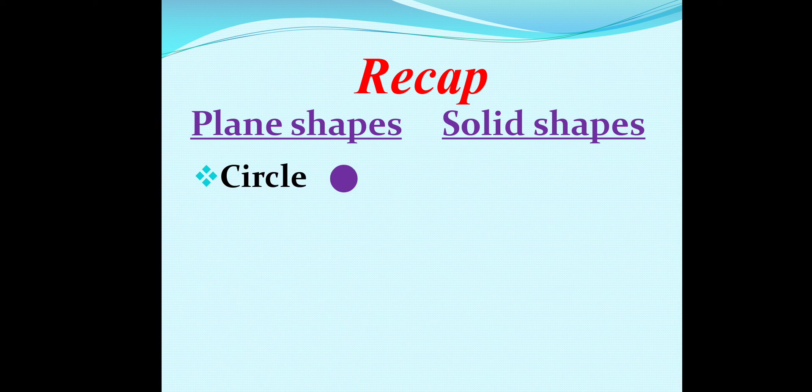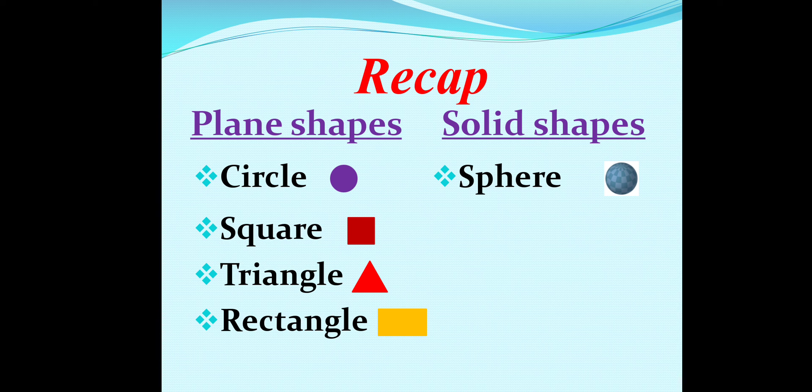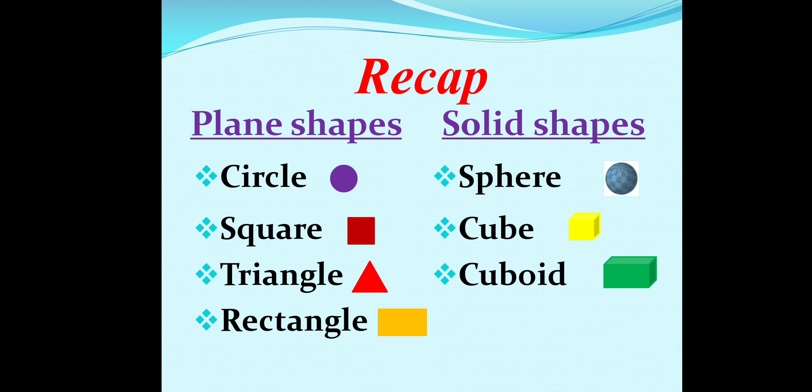Now, quickly, we will go for recap. What we have learned today in the chapter spaces and shapes. There are two types of shapes: plane shapes and solid shapes. In the plane shapes, we have learned circle, square, triangle, rectangle. In solid shapes, we have learned about sphere, cube, cuboid and cylinder.